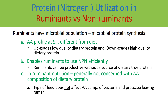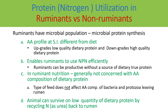The type of feed does not affect the amino acid composition of bacteria and protozoa leaving the rumen — this is important when microbial protein synthesis occurs. Whether feeding high or low quality protein, it does not impact the amino acid composition of the microbes. Additionally, animals can survive on low quantities of dietary protein by recycling nitrogen as urea back to the rumen through saliva and the ruminal wall, providing nitrogen for microbial activity.